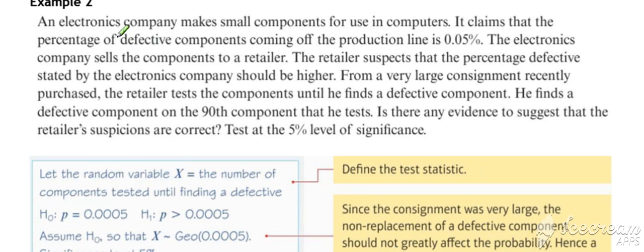Another example then for a geometric. An electronics company makes small components for use in computers. It claims the percentage of defective components coming off the production line is equal to 0.05%, so a p-value of 0.0005.